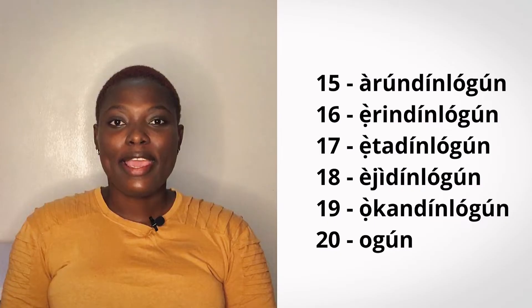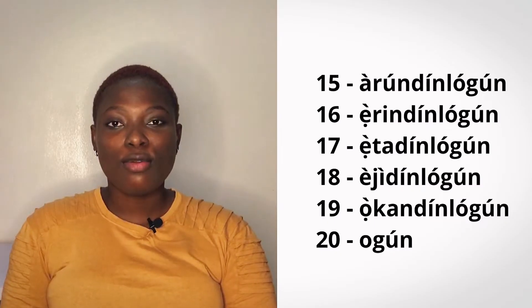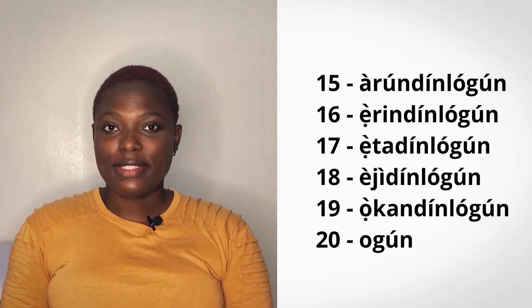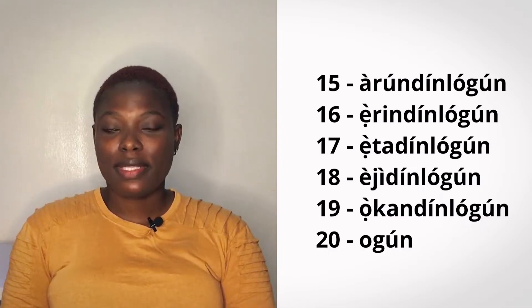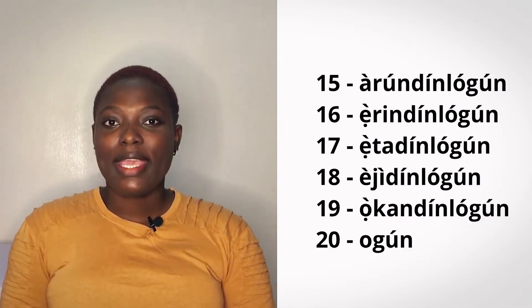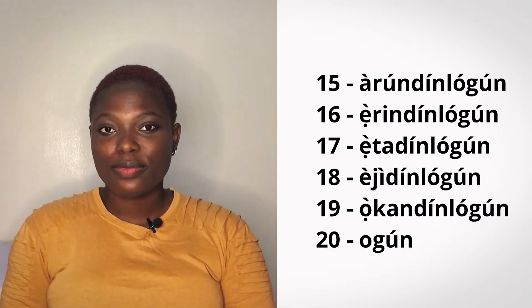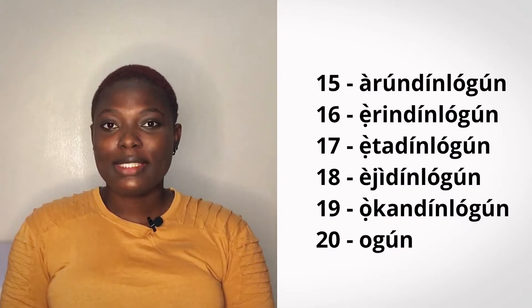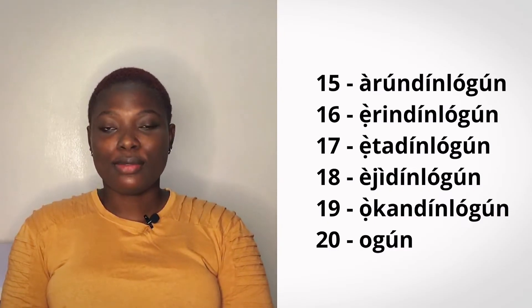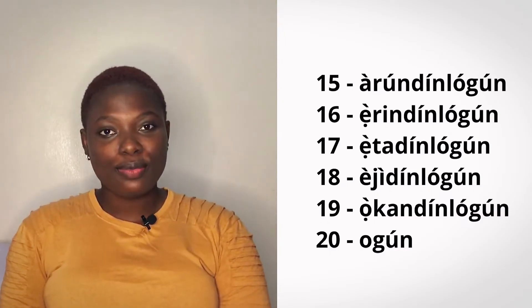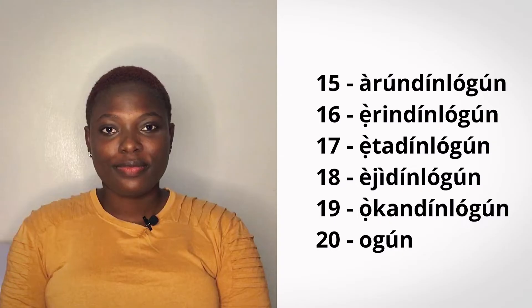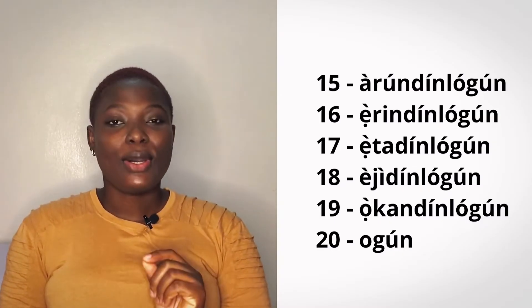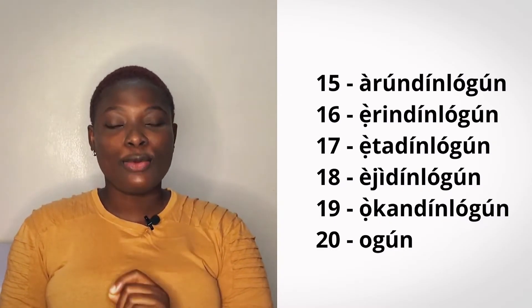17 is 20 minus 3 — eta dilogun. 18 is 20 minus 2 — eji dilogun. 19 is 20 minus 1 — okon dilogun.